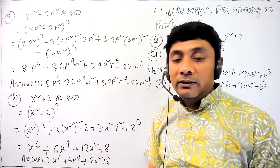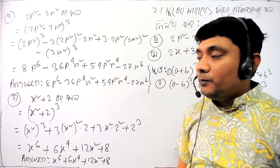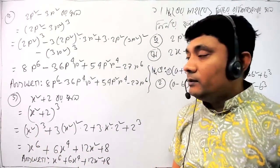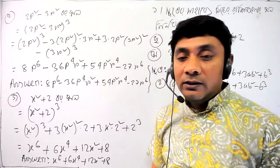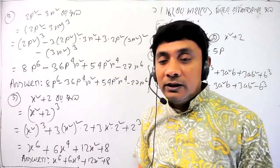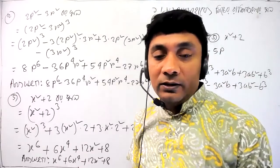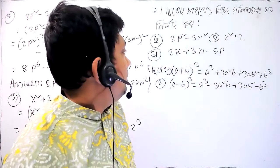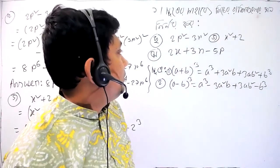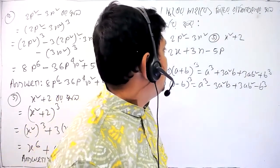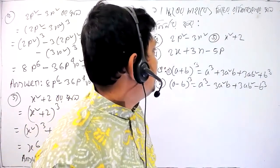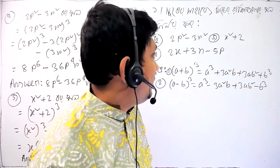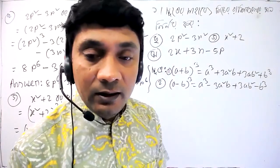So you will see for this one. Next problem: 2x plus 3n minus 5p.